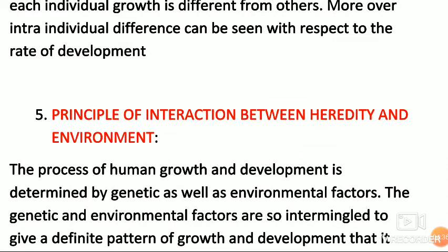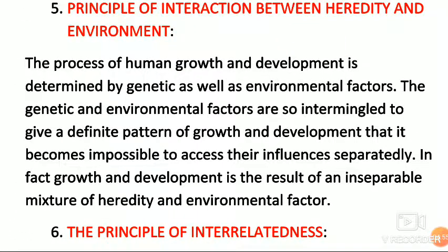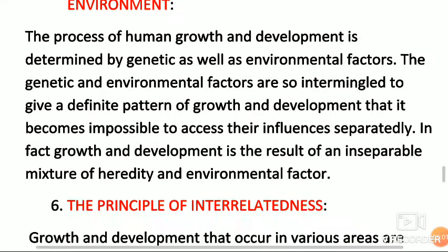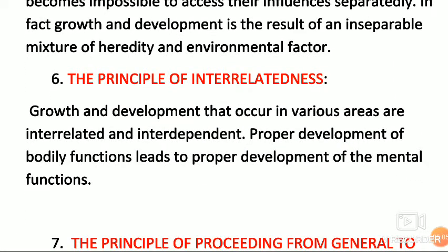Principle number five is the principle of interaction between heredity and environment. Development always depends on heredity and environment, so we can write: Development = Heredity × Environment. The multiplication of heredity and environment makes our development — meaning it depends neither on heredity nor environment alone, but on both. The principle of interrelatedness is also important for development.